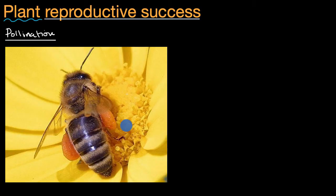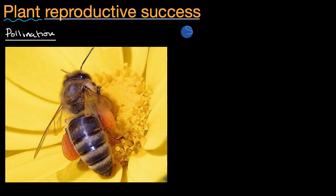Now, once a plant is able to reproduce, we also need to think about how viable its offspring are going to be. Are they in conditions where they are likely to succeed in living and then reproducing themselves? And here, a common strategy, or at least a category of strategies that plants use, are known as seed dispersal.